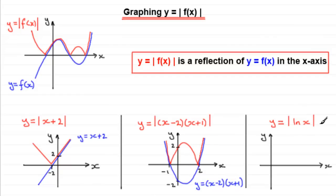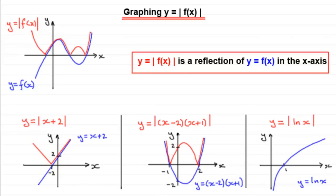Finally, y equals the mod of the natural log of x. The normal graph of y equals ln(x) crosses the x-axis at x = 1, with the y-axis as a vertical asymptote, rising from below and continuing upward. For y equals the mod of ln(x), the part of the curve that is negative gets mirrored in the x-axis, approaching the y-axis. The positive part stays exactly the same.